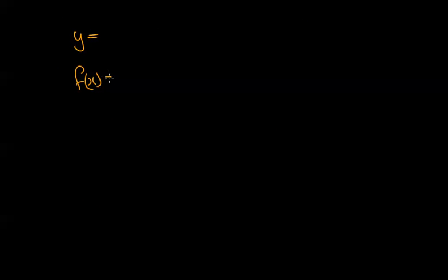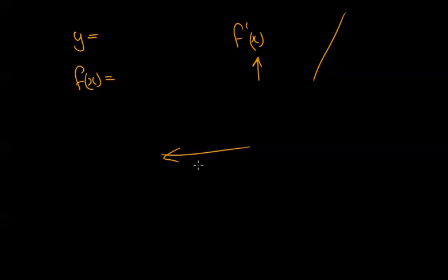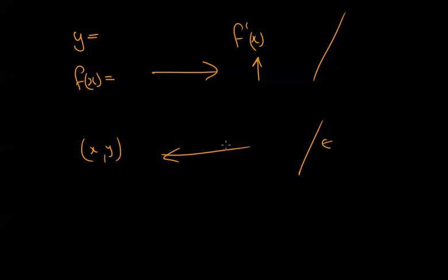So that's what we use the gradient function for. We either start with a function, differentiate it, and plug in an x value to find the gradient — or we work backwards: given the gradient, we find the x value and then the full coordinate.